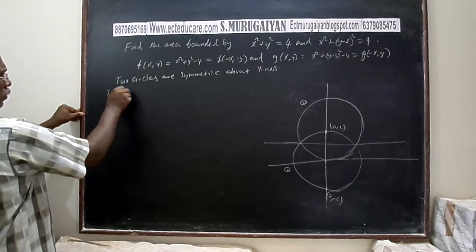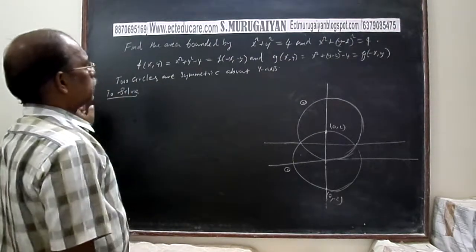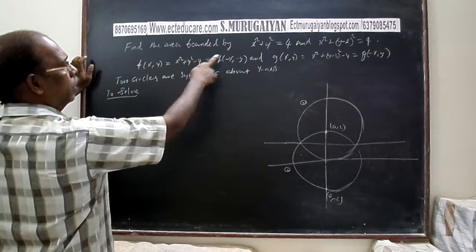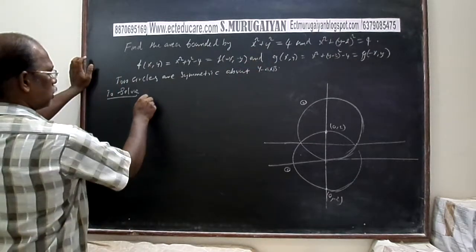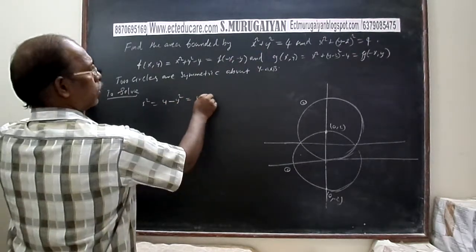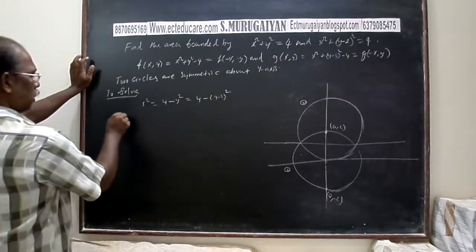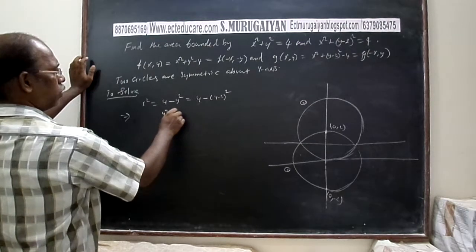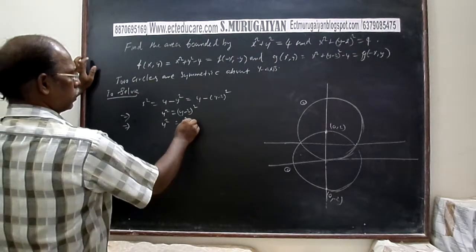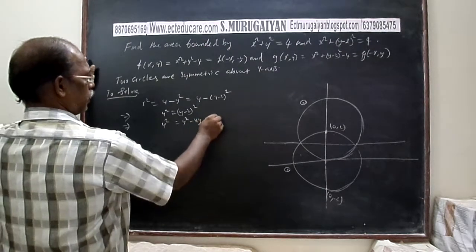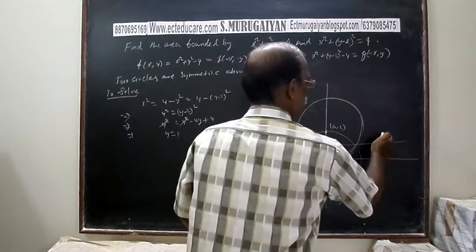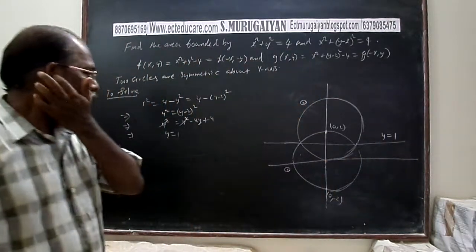To find the common points, from the first circle x² = 4 - y², and from the second circle x² = 4 - (y - 2)². Setting equal: 4 - y² = 4 - (y - 2)², which gives y² = y² - 4y + 4, so 4y = 4, and y = 1. This is the line y = 1.